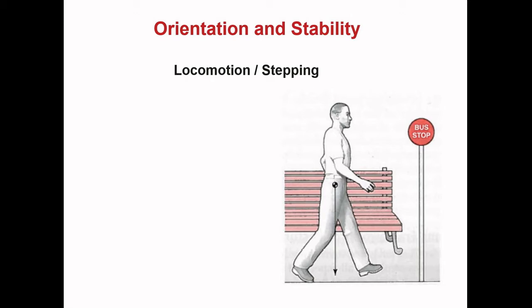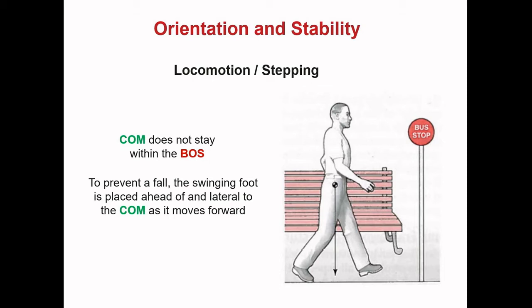What do orientation and stability requirements look like for tasks like walking or taking a step? In these tasks, the centre of mass does not stay within the base of support. As you take a step forward, the centre of mass moves out in front of the base of support provided by the stance limb. To prevent a fall, the foot that has stepped out needs to be placed ahead of the centre of mass to create a new base of support. Consequently, in walking, the base of support is being created dynamically with each foot strike.